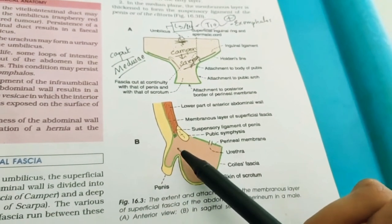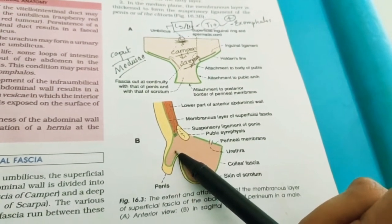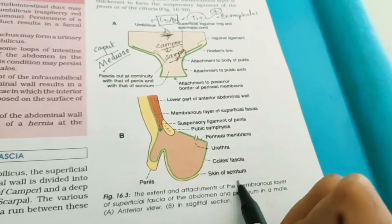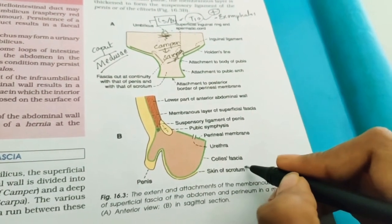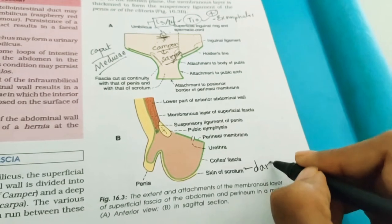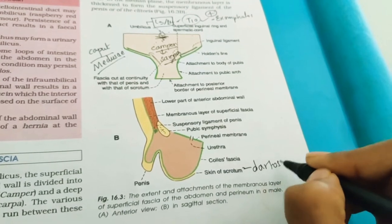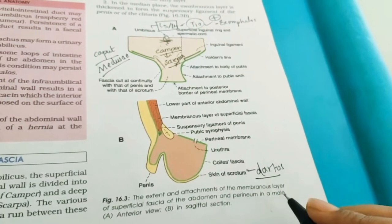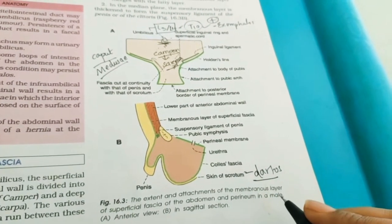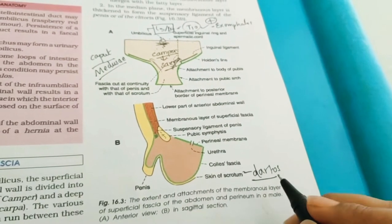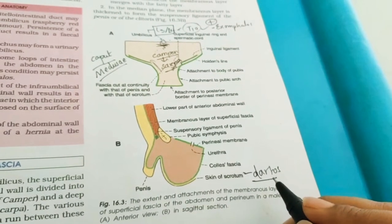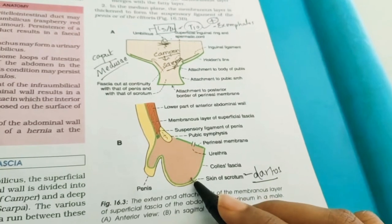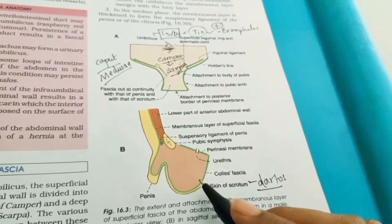In the scrotum, the superficial fatty layer of Camper is replaced by the dartos muscle. So the dartos muscle is essentially the equivalent of the superficial fatty layer of the anterior abdominal wall in the scrotum in males.